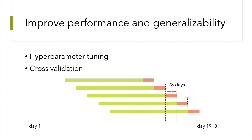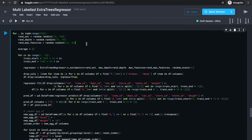Two of the main things in building a machine learning model are: first, hyperparameter tuning, and second, cross-validation to pick parameters that are both good and generalizable. For hyperparameter tuning, I'm planning to use random search over a range of reasonable values for number of estimators, maximum depth, and maximum features.